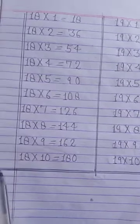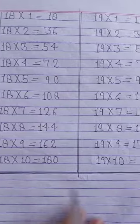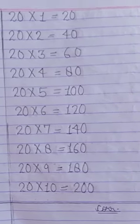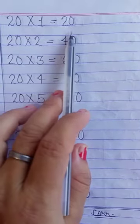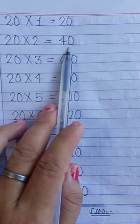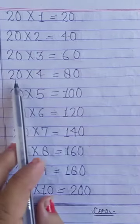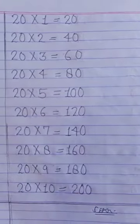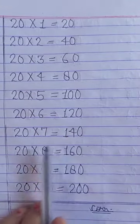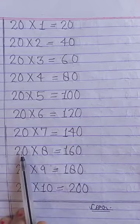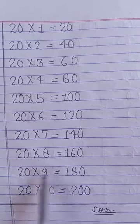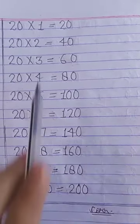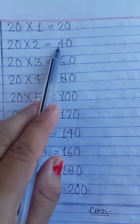Now after table of 18 and 19 you draw line like this. Now after table of 19 you open your next page and write table of 20. 20 ones are 20. 20 twos are 40. 20 threes are 60. 20 fours are 80. 20 fives are 100. 20 sixes are 120. 20 sevens are 140. 20 eights are 160. 20 nines are 180. 20 tens are 200.